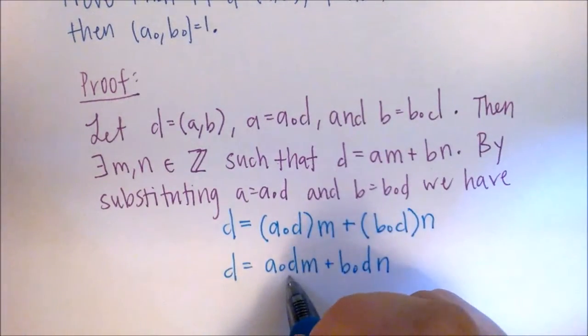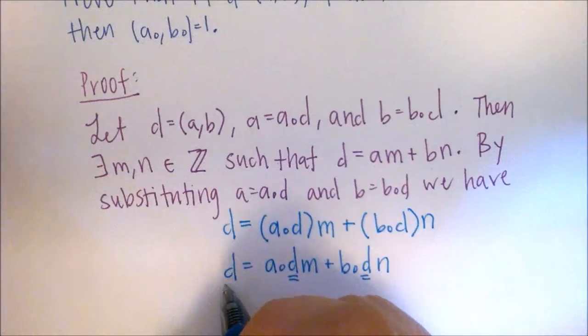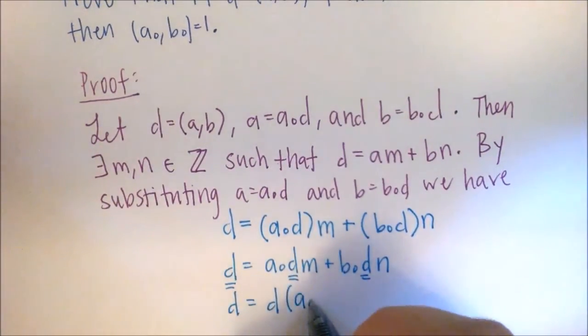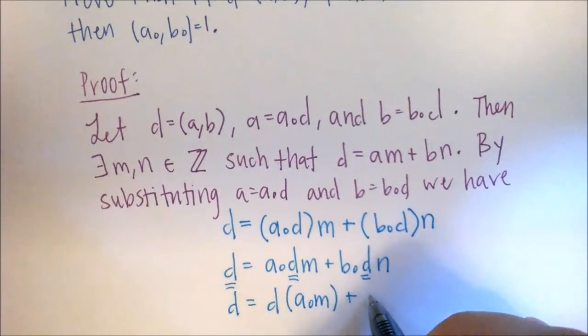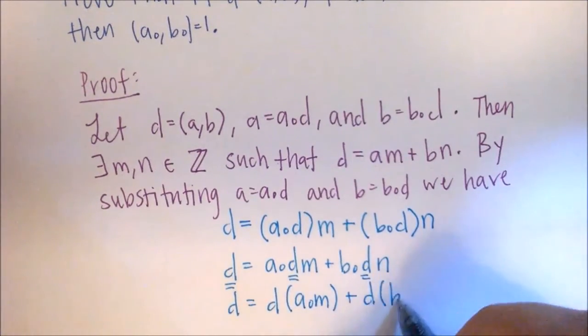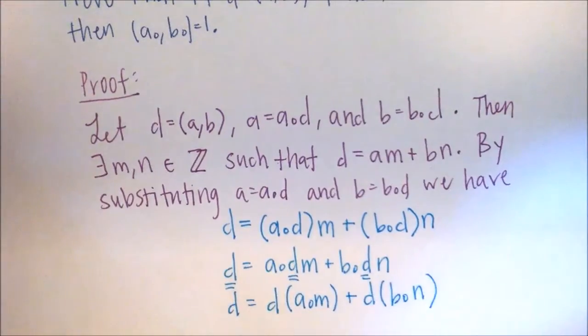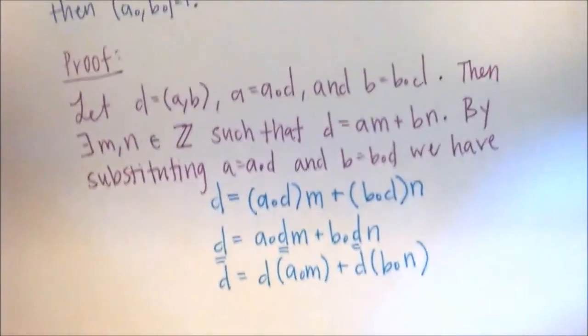So now we have a common factor of D. So we can say D equals D times A0M plus D times B0N. So we just factored out the D.